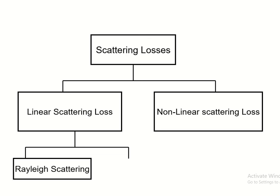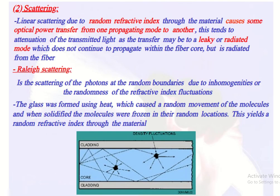There are two types of scattering losses: linear scattering loss and nonlinear scattering loss. Linear scattering losses commonly occur in fiber communication. Under linear scattering loss, we have two types: Rayleigh scattering and Mie scattering. Linear scattering due to random refractive index variations through the material causes optical power transfer from one propagating mode to another, leading to attenuation of the transmitted light, as the transfer may be to a leaky or radiated mode which does not continue to propagate within the fiber core but radiates from the fiber.